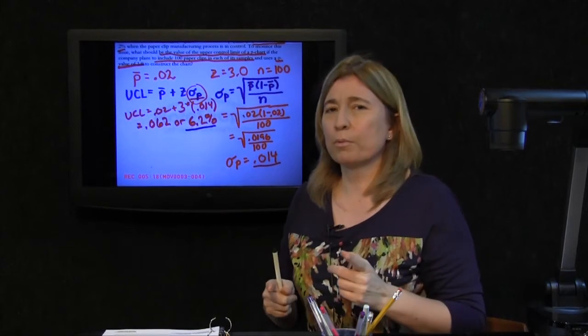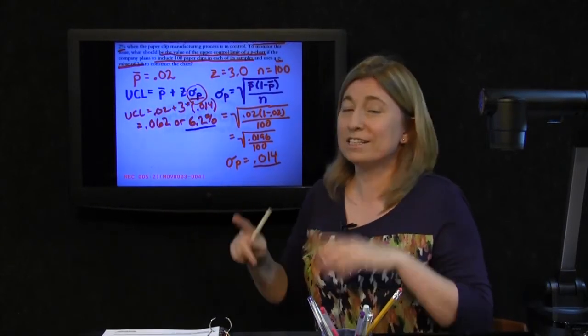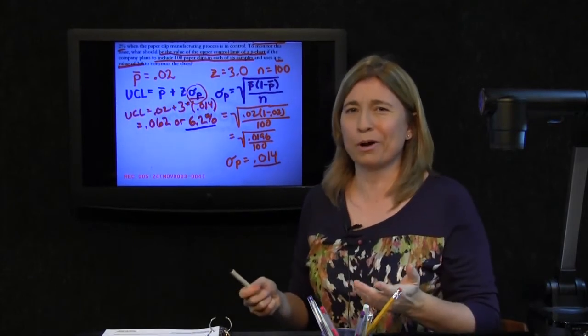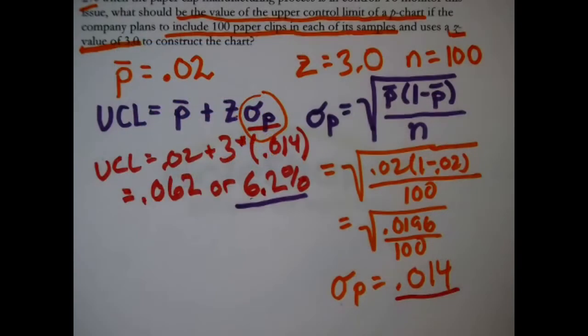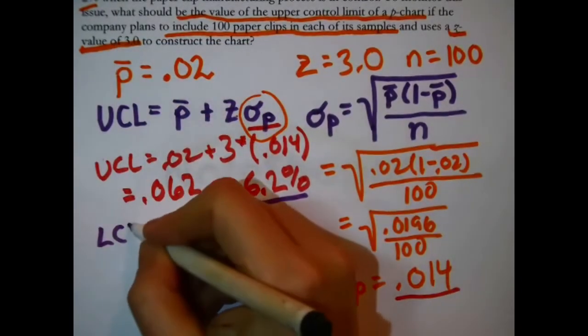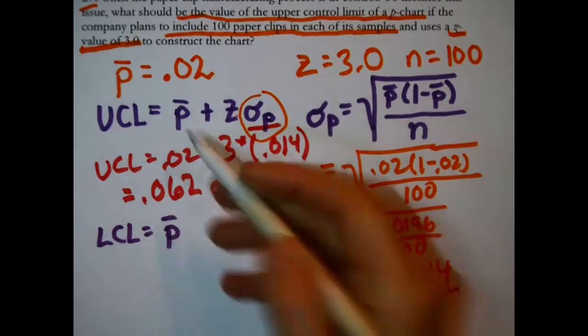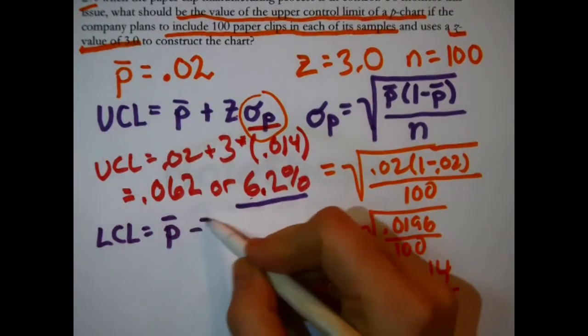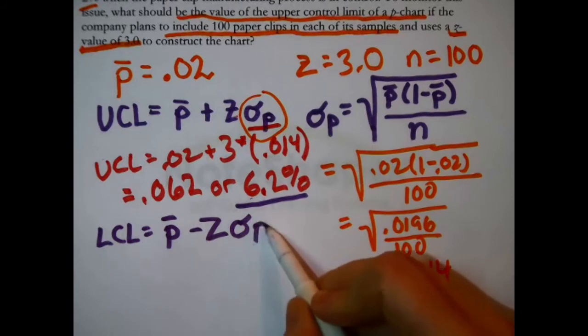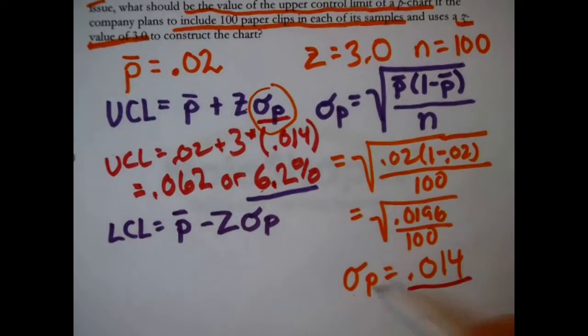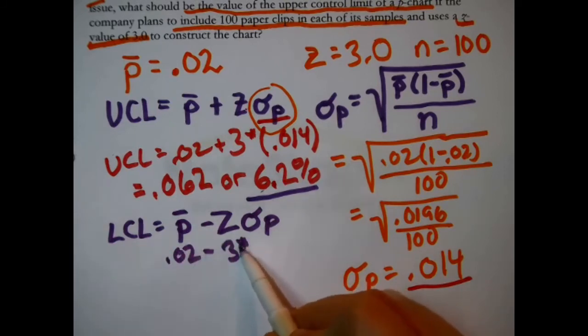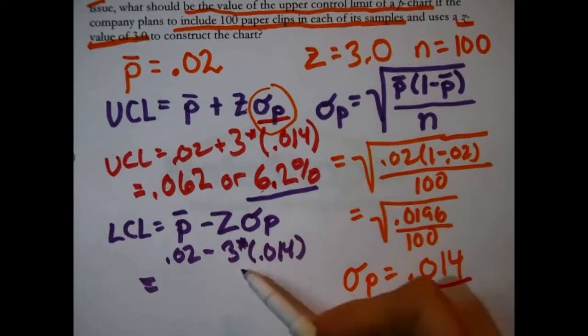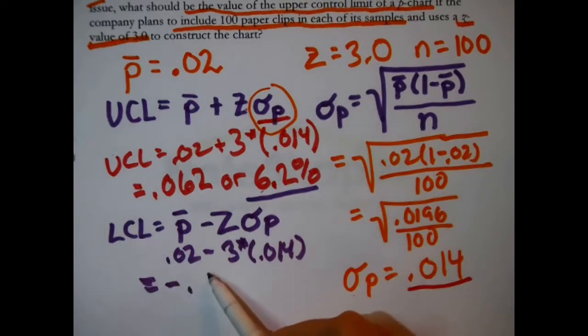If you want a little bit more practice, we could calculate the lower control limit. It didn't ask for that, but this is kind of like a bonus round. The lower control limit is just that same average proportion minus Z times the standard deviation in the sample proportions. So you'd say 0.02 minus 3 times 0.014. If you put that in your calculator, what you're going to see is a negative 0.022.